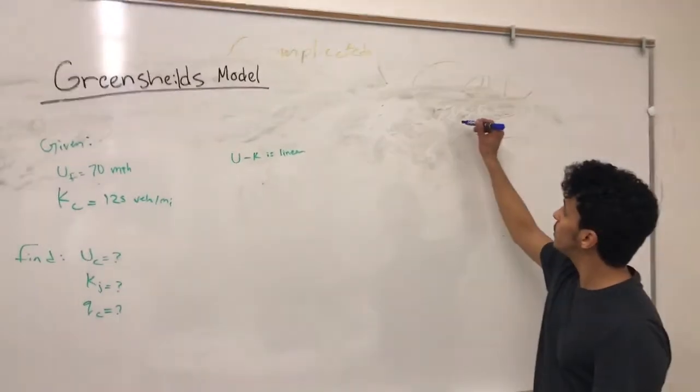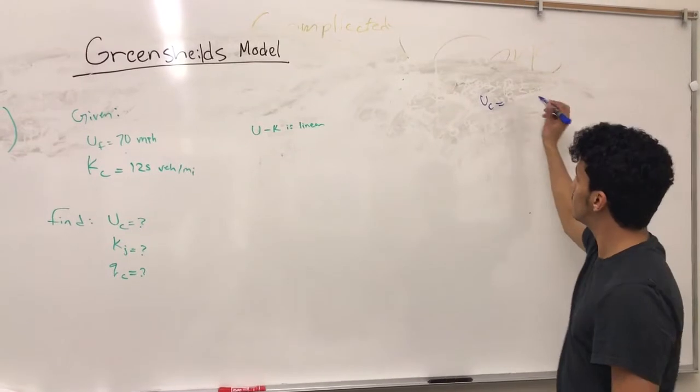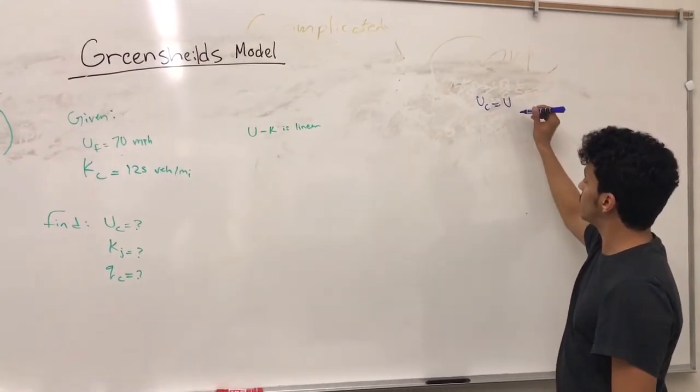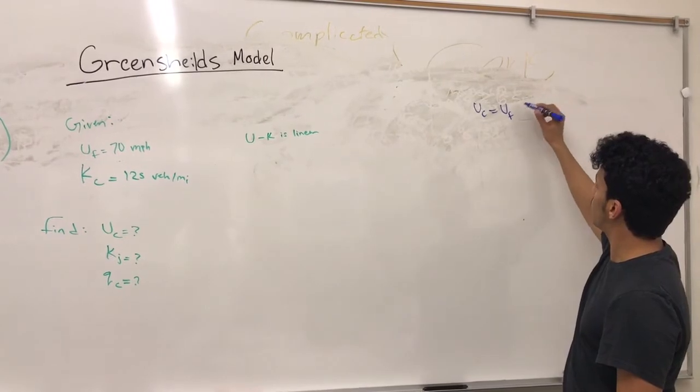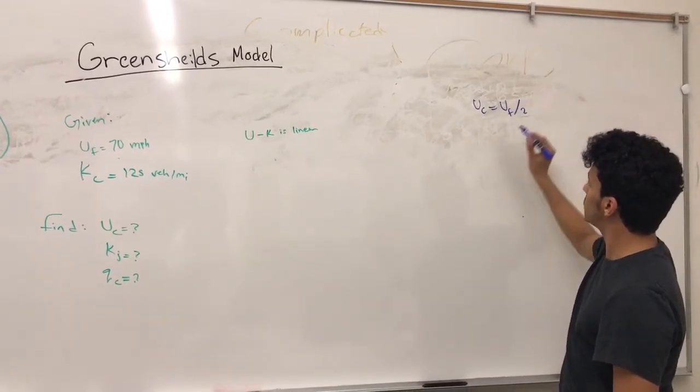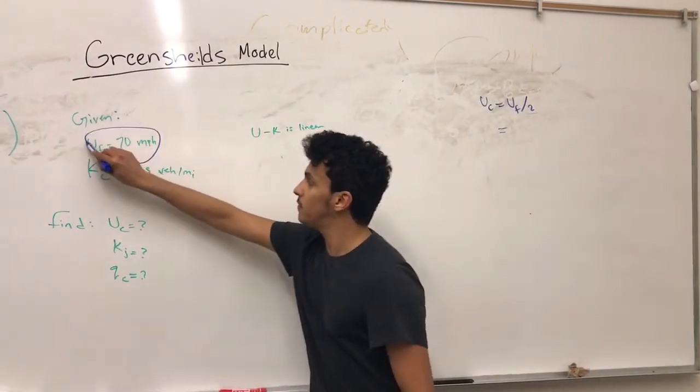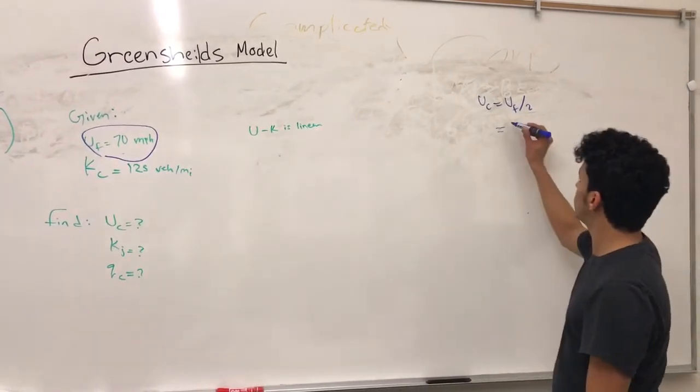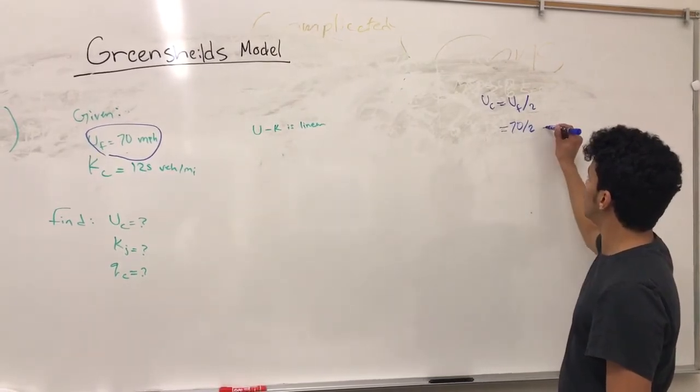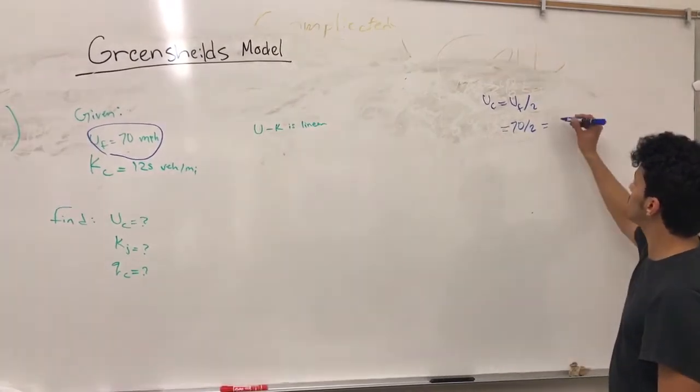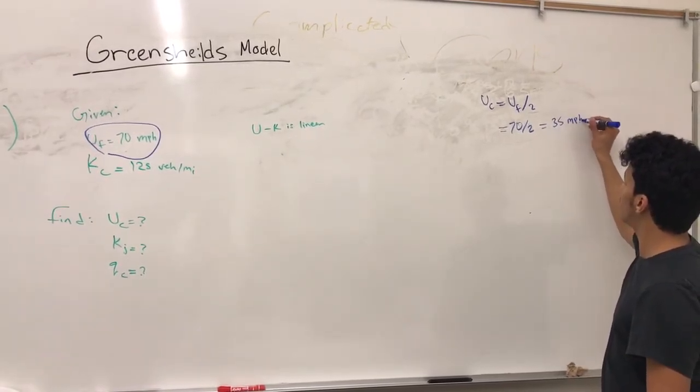First we find speed at capacity which equals free flow speed over 2. And since we have the free flow speed, which equals 35 miles per hour.